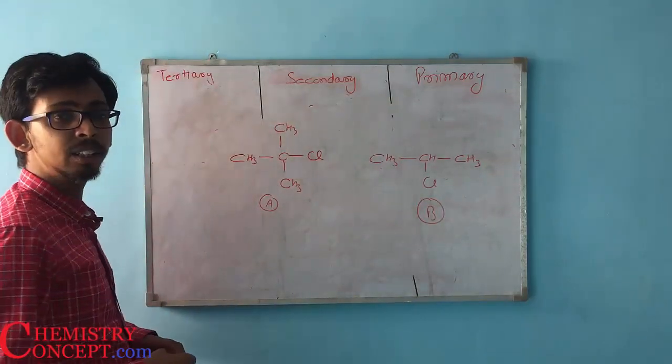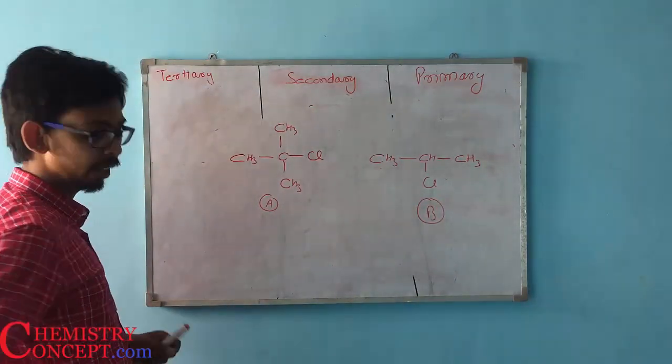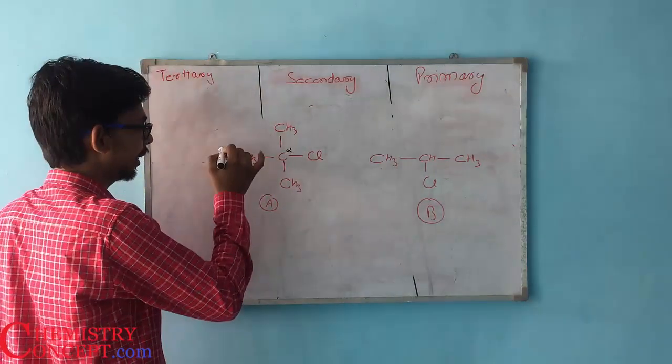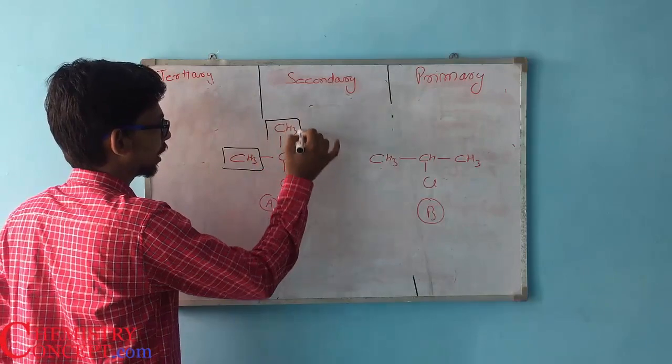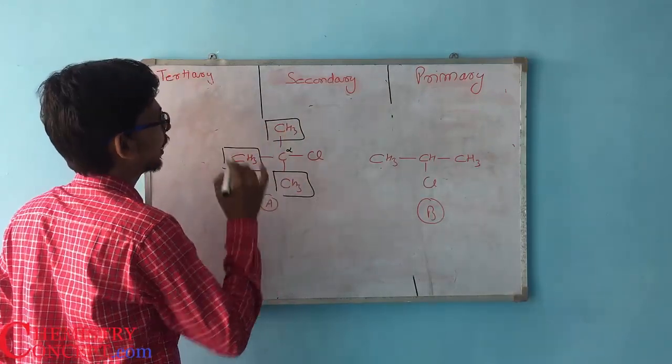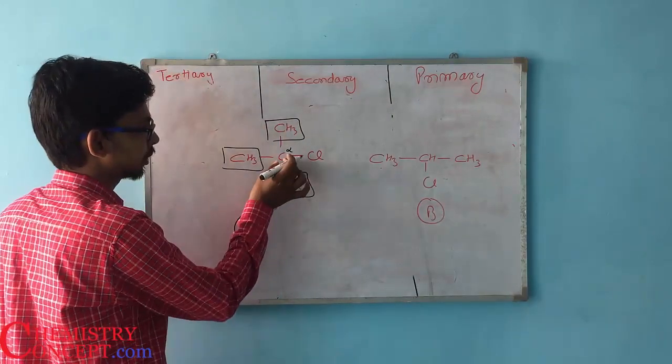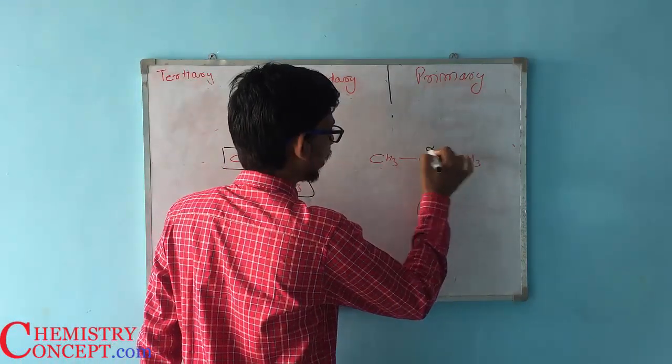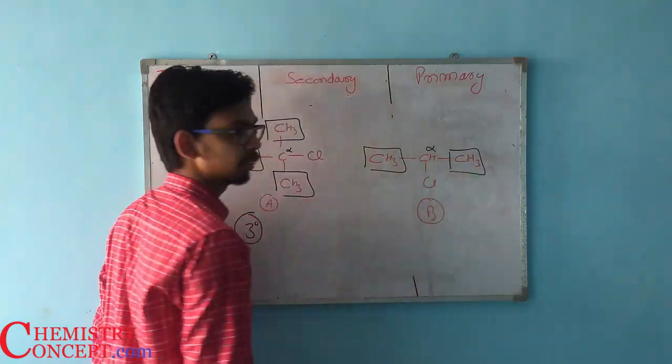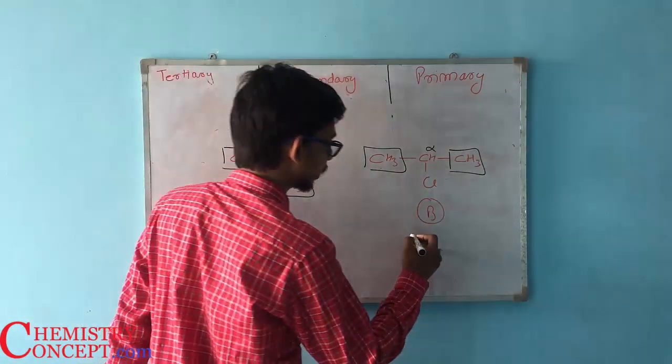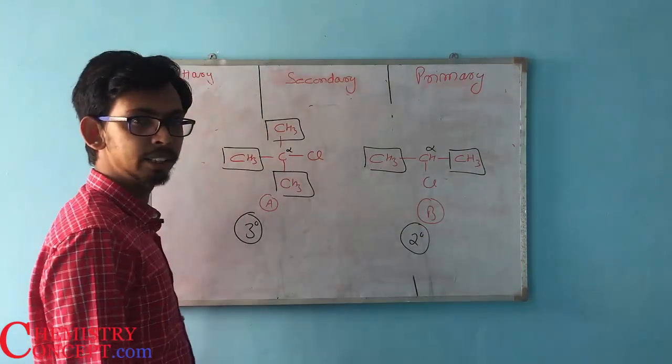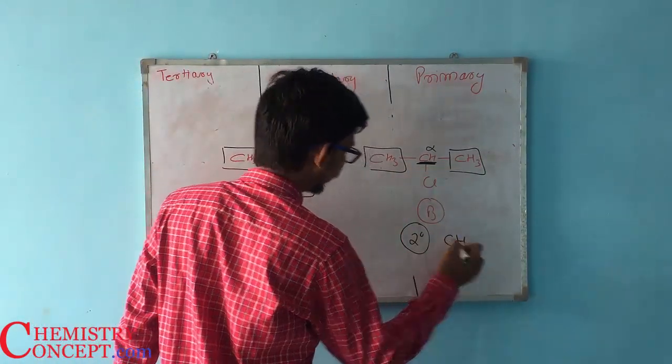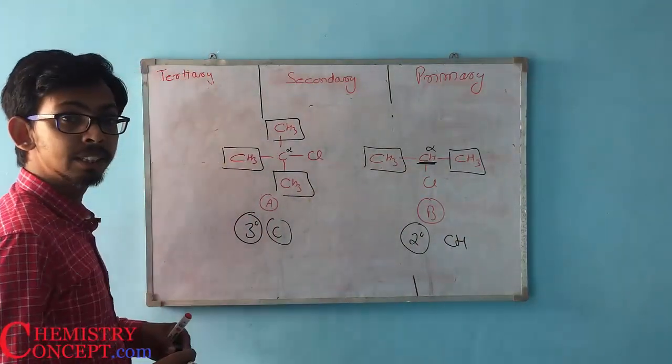We have to see if it is primary or secondary. As I said, we'll look at the alpha carbon. Here, the alpha carbon in A is attached to three carbon chains, and that is why it is tertiary or 3D. And also it is C. In this one, the alpha carbon is attached to two carbons, and that is why it is secondary. Simple. And I told you, in secondary, alpha is CH. In primary, the alpha carbon is only C.